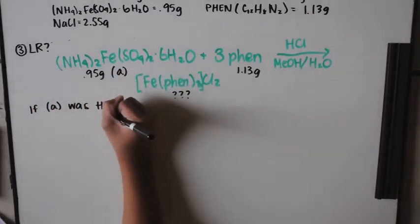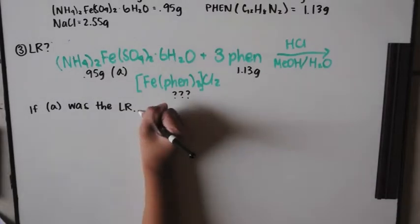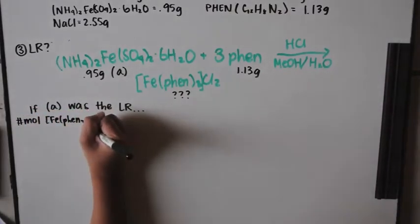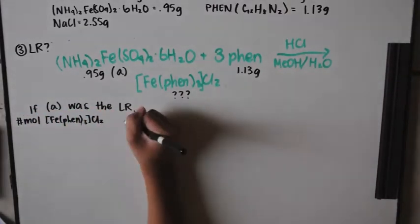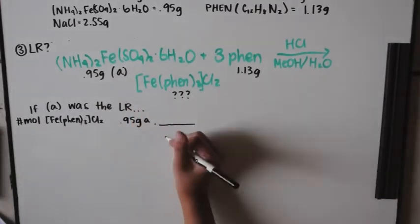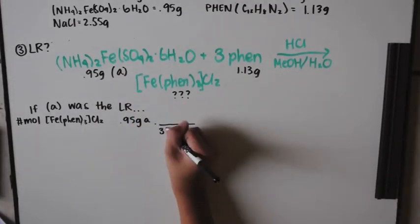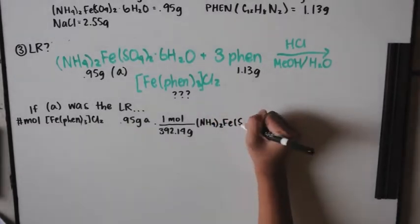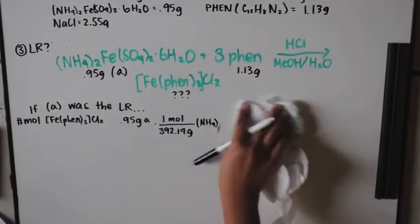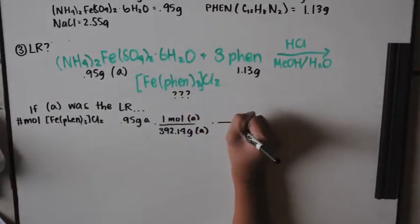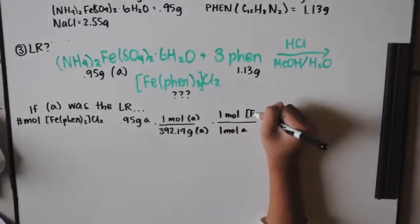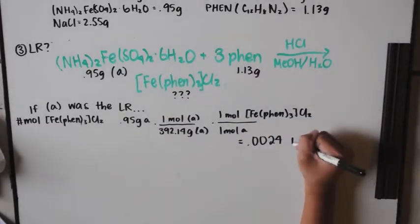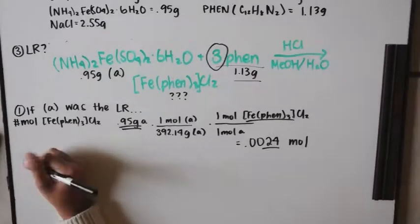If ferrous ammonium sulfate (abbreviated A) were the limiting reagent, given 0.95 grams of A, you'd use molar mass and the one-to-one mole ratio to find how many moles of iron tris-phen chloride salt it could produce — that comes out to 0.0024 moles.